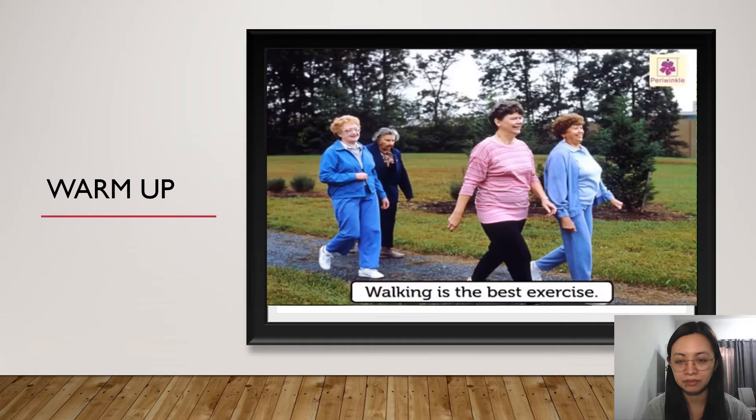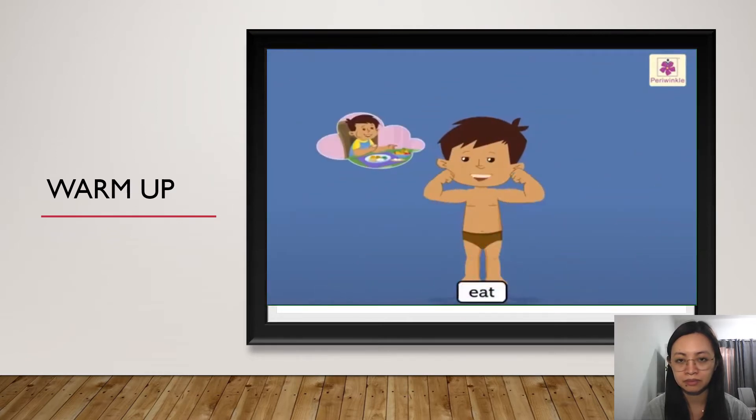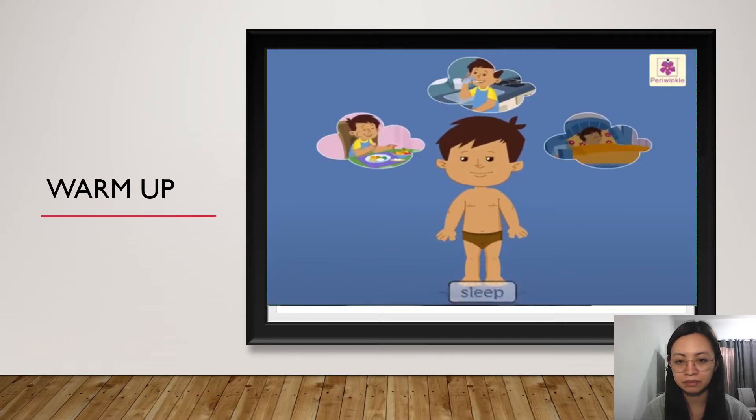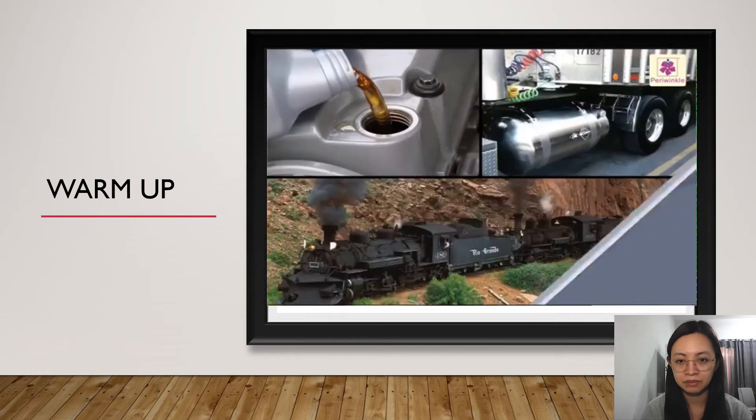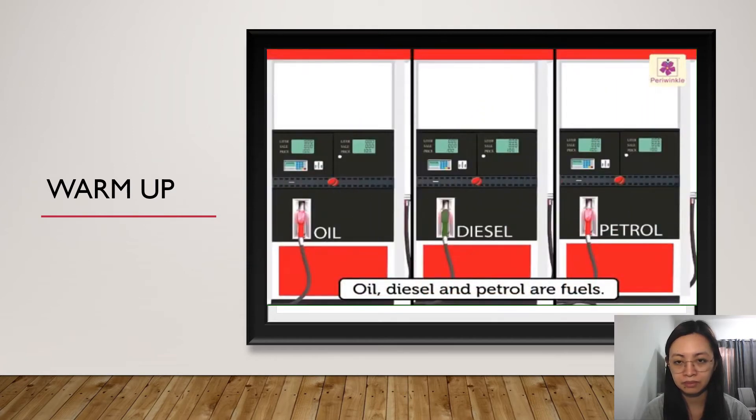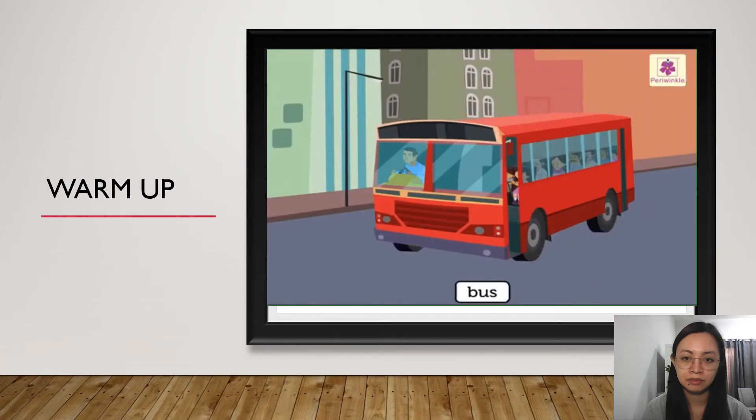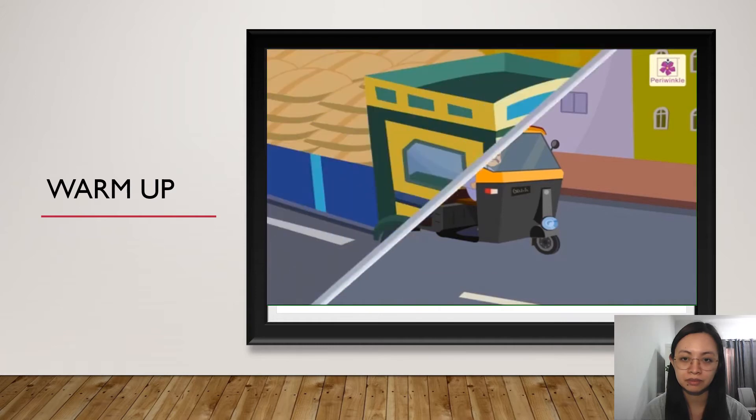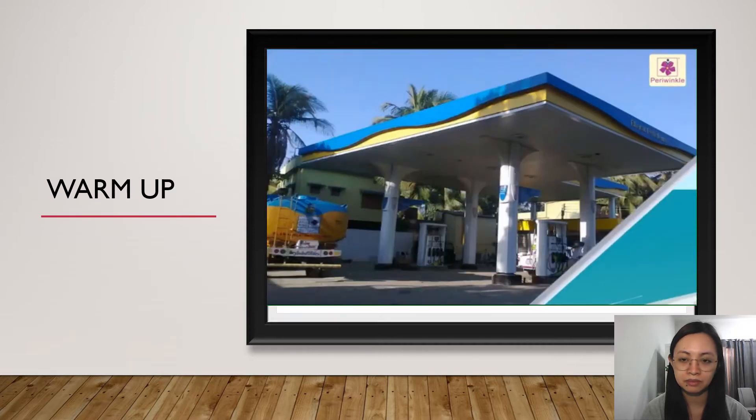We can travel by walking too. Walking is the best exercise. Walk short distances if you can. We need energy to walk or run. We have to eat, drink and sleep properly to get energy. This energy is our fuel. Most of the vehicles are drawn by engines that run on oil, diesel or steam. Oil, diesel and petrol are fuels. Vehicles like scooter, car, bus, auto rickshaw, tempo, aeroplane, big boats need fuel.